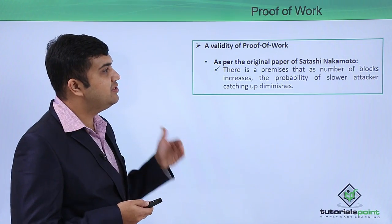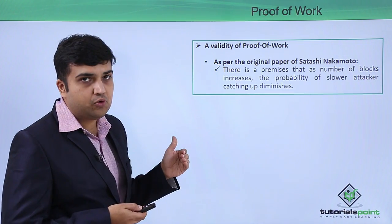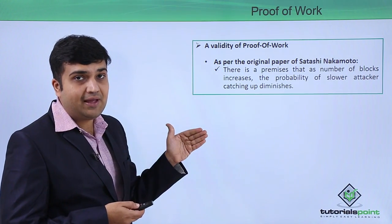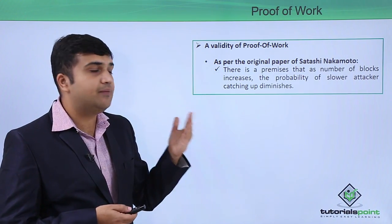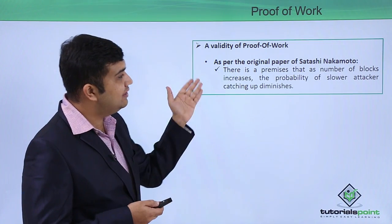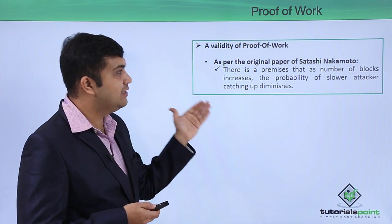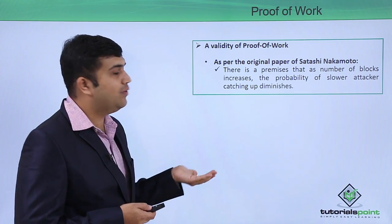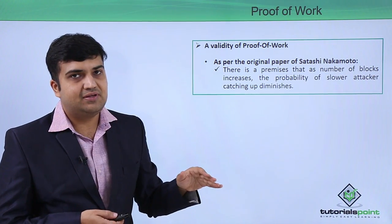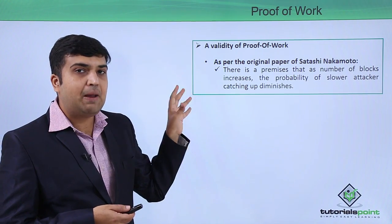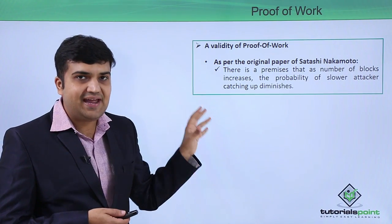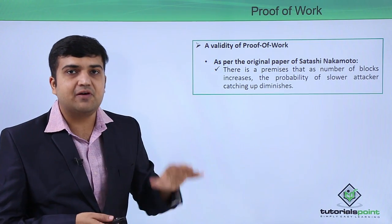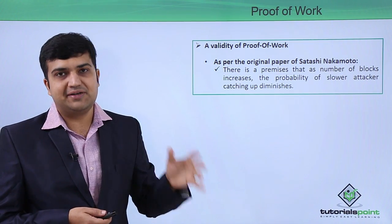As per the original paper of Satoshi Nakamoto, there is a premise in the paper and some mathematical proof shown that as the number of blocks increases, the probability of the slower attacker trying to catch up diminishes. This is one of the premises on which it is said that it manages the trust framework by using the proof of work concept.